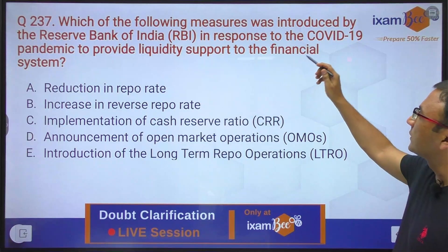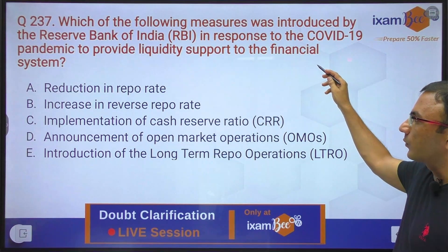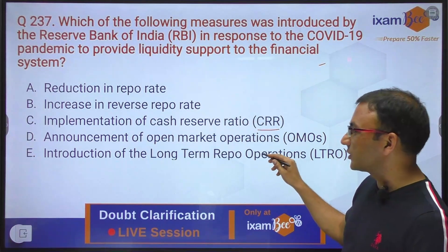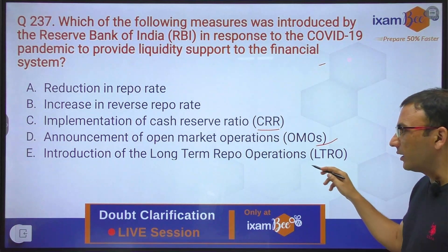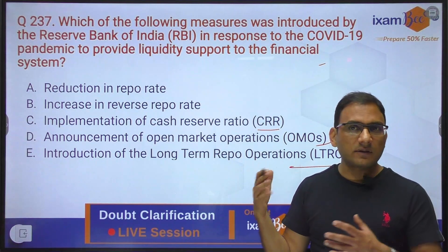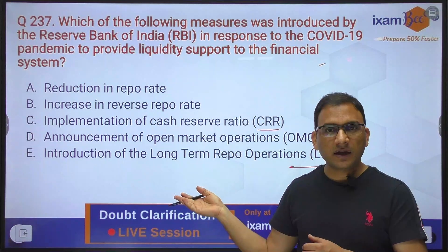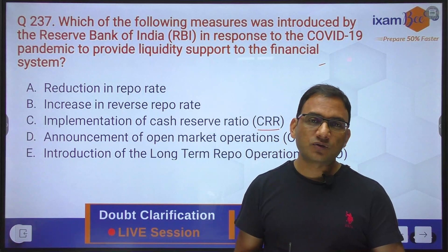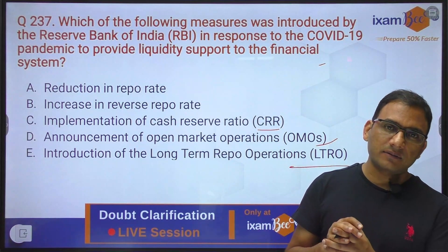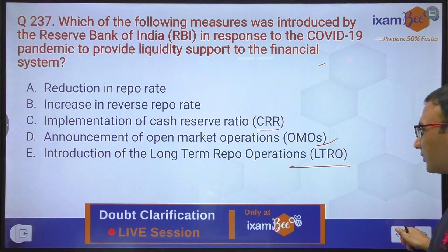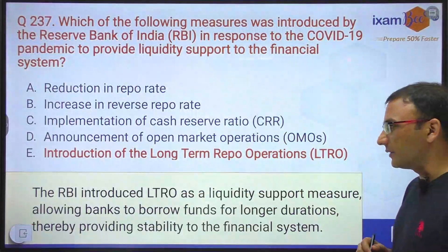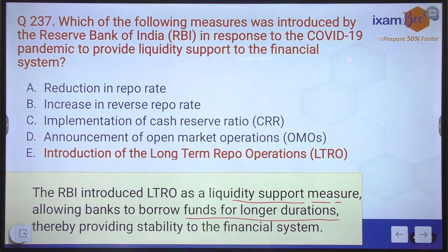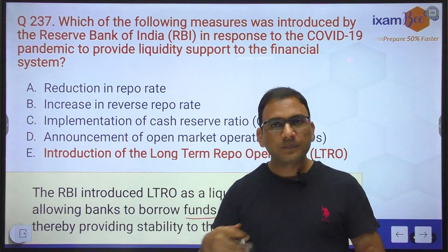Which of the following measures was introduced by RBI in response to the COVID-19 pandemic to provide liquidity support to the financial system? Options are: repo rate kam kiya, reverse repo rate badaya, CRR ka implementation kiya, OMOs announce kiya — abhi mujhne samjhaya hai OMOs kya hai — ya introduction of LTRO. Ab aapko lag raha hai yeh sab theek lag raha hai. The best option you have to choose. LTROs ka agar aapne naam suna hoga toh kewal tabhi suna hoga. Long Term Repo Operations — RBI ne introduce kiya tha as a liquidity support measure, allowing banks to borrow funds for longer duration, thereby providing stability to the financial system — long term mein banko ko liquidity support diya tha.